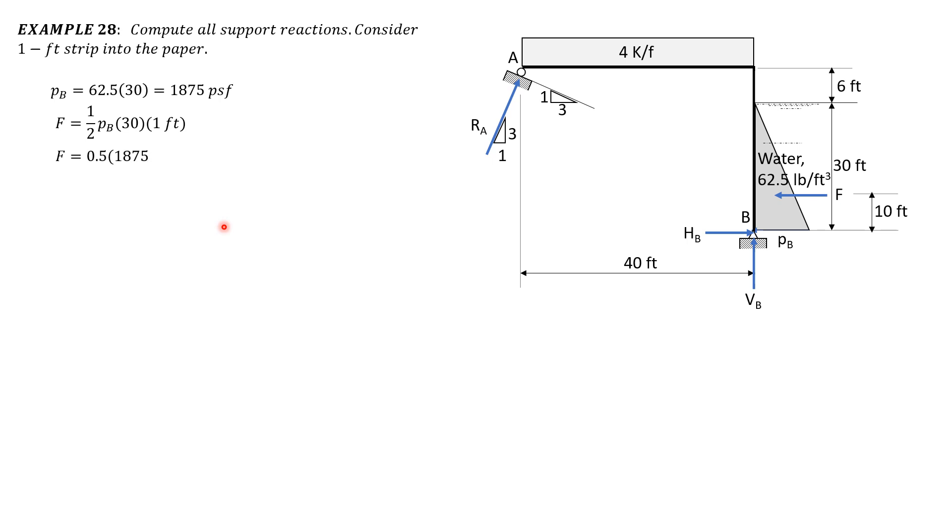So substitute F is 0.5. This is for one half. Pressure B 30 times one foot. So it is 28125 pounds or 28.125 kips.